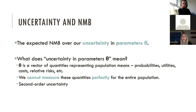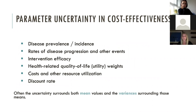Theta is a vector of quantities representing population means for the relevant population — probabilities, utilities, costs, strategies, etc. Our uncertainty about theta comes from the fact that we cannot measure these quantities perfectly for the entire population. This is second-order uncertainty, that is, the standard error of the mean. Parameters include disease prevalence, incidence rates, disease progression, intervention efficacy, health-related quality-of-life weights, costs, and others. Often the uncertainty surrounds both mean values and the variances around those means.